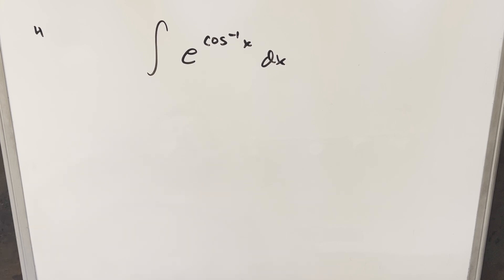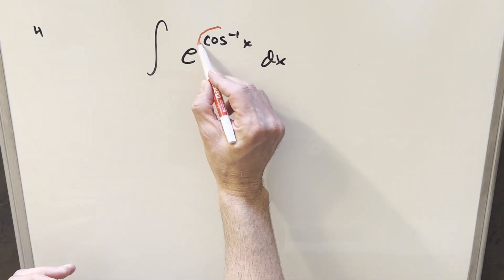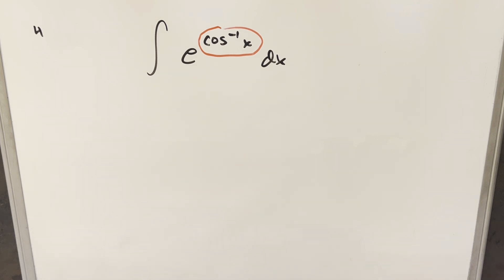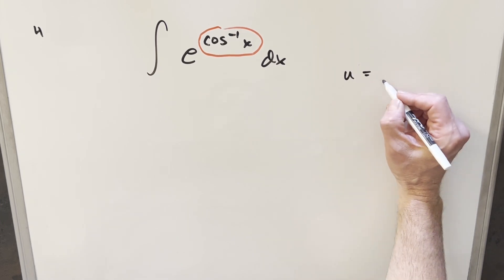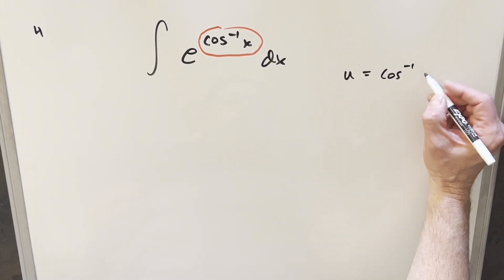We have the integral of e to the arccos x dx. Now to get started with this one, really what I want to deal with is just this crazy exponent on the e. We don't really want that there, so let's do a u substitution to try to simplify this.